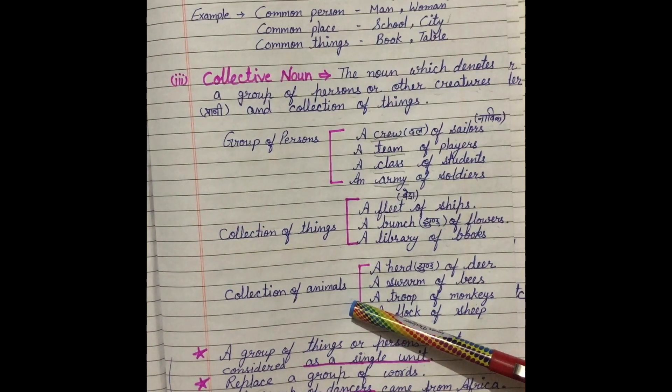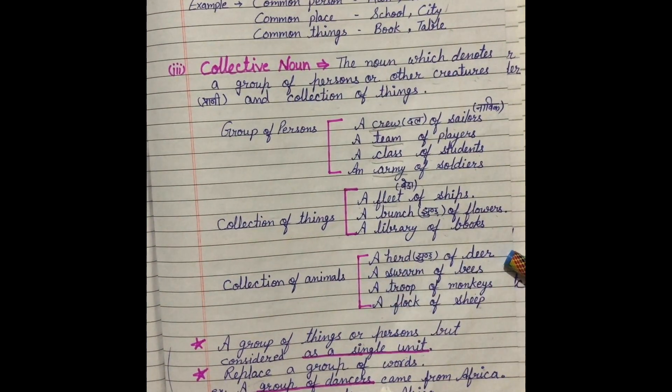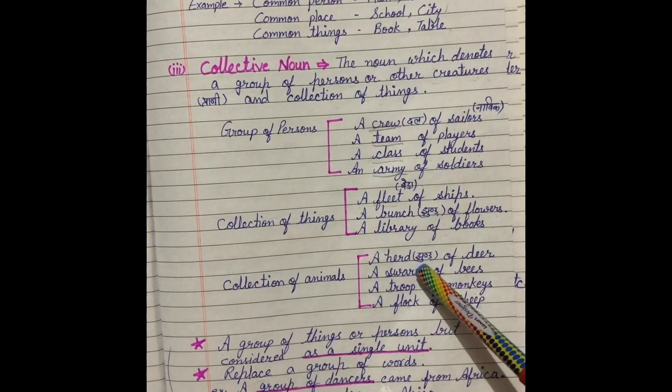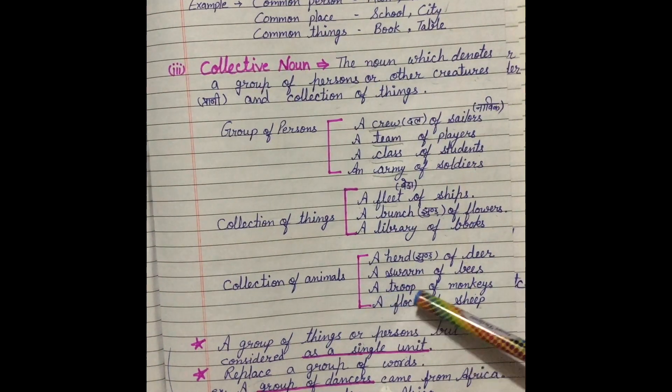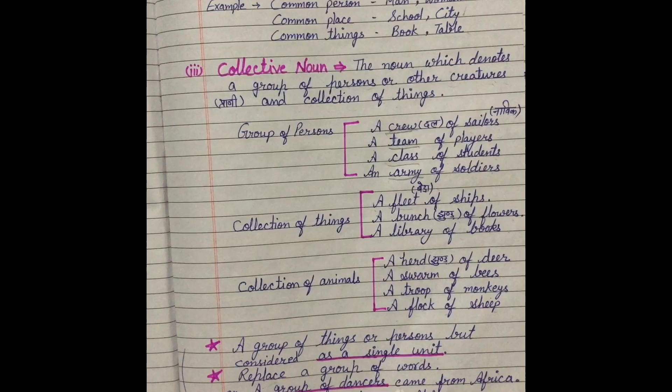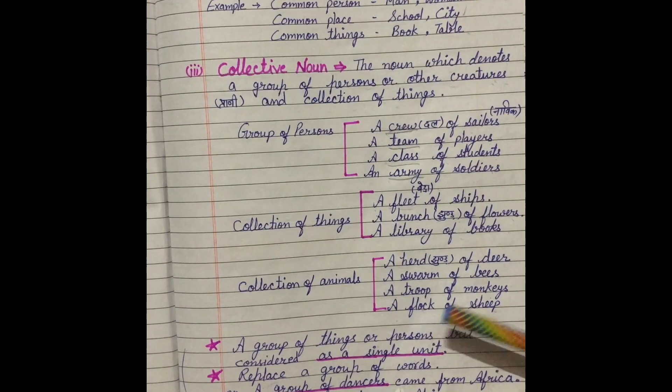Collection of animals. Animals ka collection. A herd of deer. Deer students, jo deer ka group hota hai, use herd kaha jata hai. Elephants ki group ko bhi herd hi kaha jata hai. A swarm of bees. Jo bees ka group hota hai, that is called a swarm. A troop of monkeys. Bandaroon ki group ko kaha jata hai troop. A flock of sheep. Dear students, birds ke group ko bhi flock kaha jata hai.